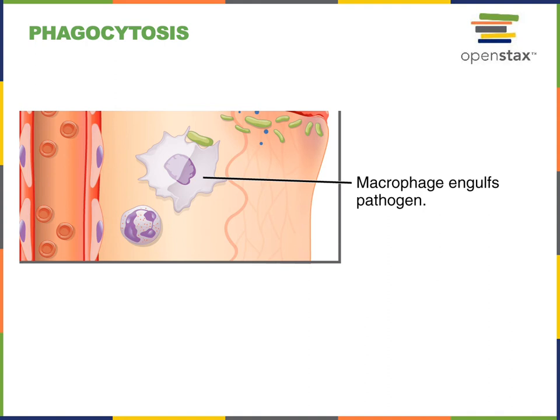As the pathogen is brought in during phagocytosis, it forms a vacuole, and the vacuole will merge with a lysosome containing digestive enzymes that will kill and break down the pathogen.